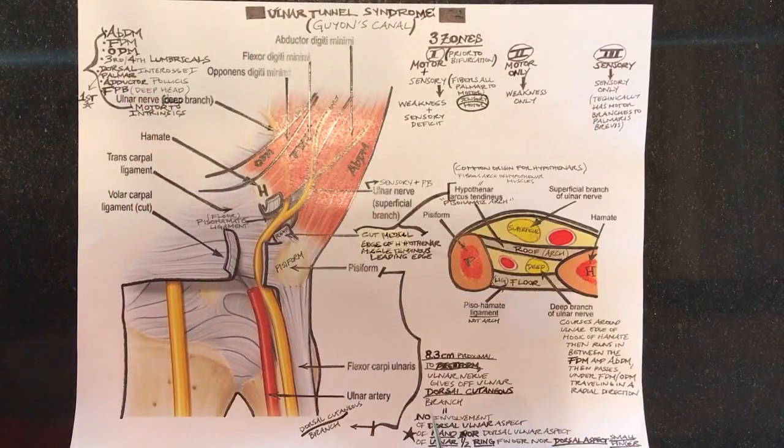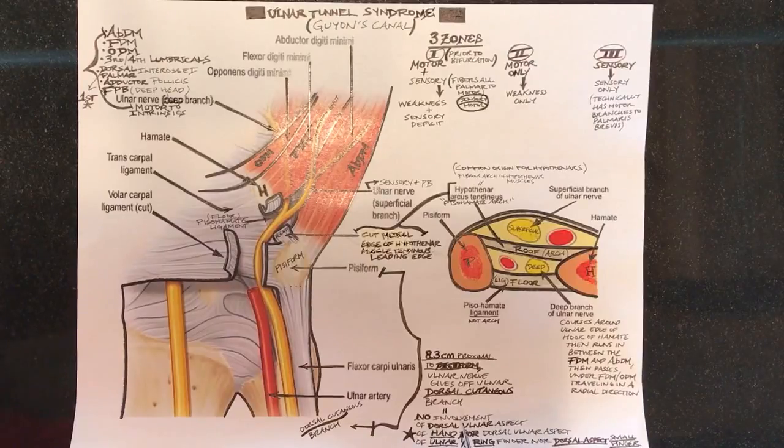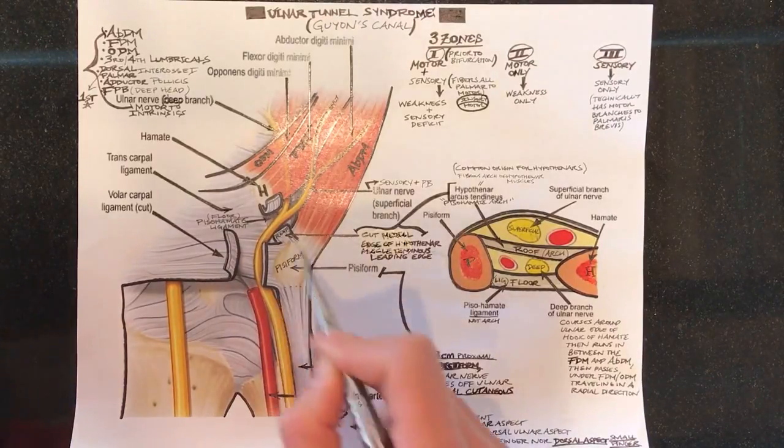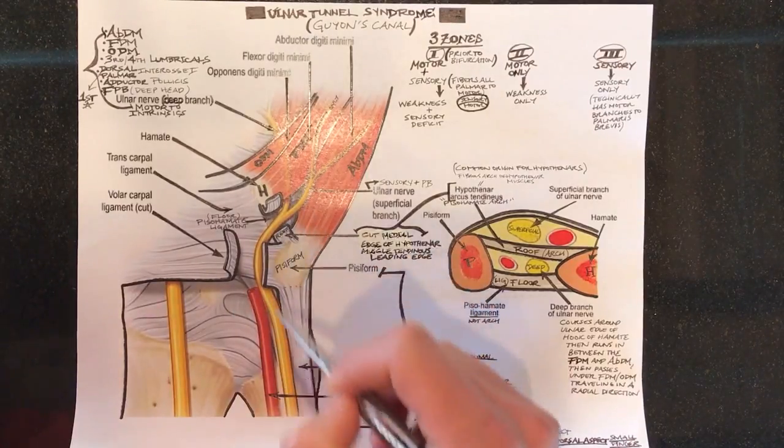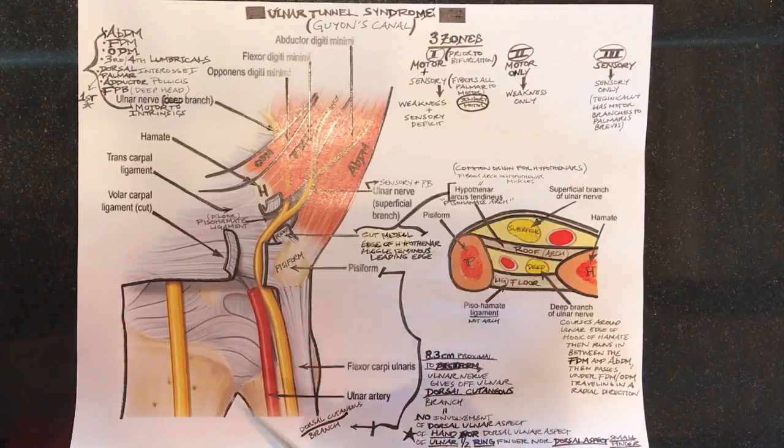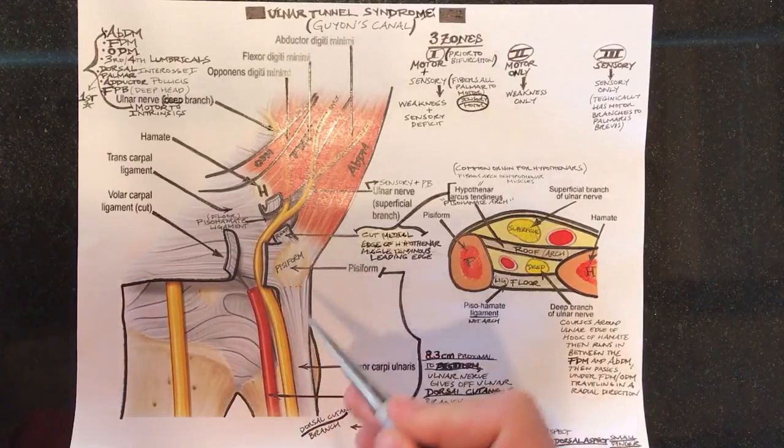So I've written here basically if there's involvement of these sensory areas, you should suspect ulnar nerve compression proximal to Guyon's Canal because this nerve comes off and does not travel. The nerve fascicles do not travel through Guyon's Canal and therefore cannot be compressed in this nerve compression syndrome.